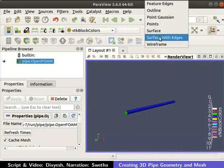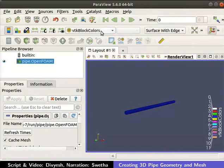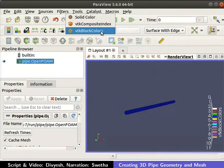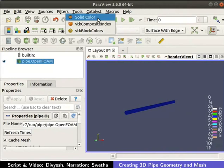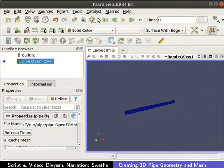Click on Surface available in the active variable controls. Then, change it to Surface with edges. Click on VTK block colors available in the active variable controls and change it to Solid color. You can now see the mesh structure of pipe geometry that we created.